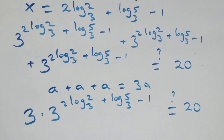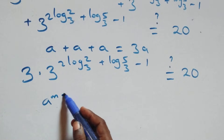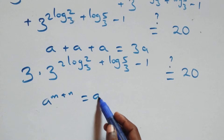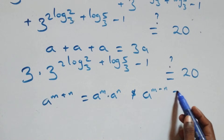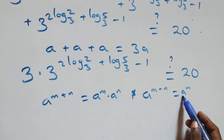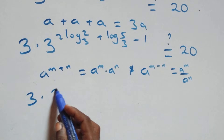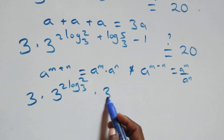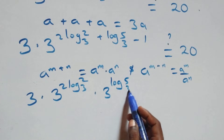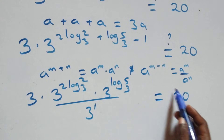So we have 3 times 3 raised to power (2 log 2 base 3 plus log 5 base 3 minus 1), equals to 20 on this side. We apply log indices: a raised to power (n plus n) equals a raised to power n times a raised to power n, and a raised to power (n minus n) equals a raised to power n over a raised to power n. We separate this and we have 3 times 3 raised to power (2 log 2 base 3) times 3 raised to power (log 5 base 3), divided by 3 raised to power 1, equals to 20.